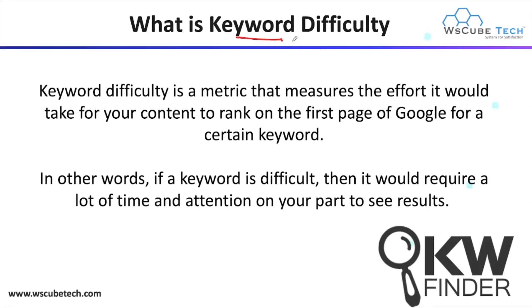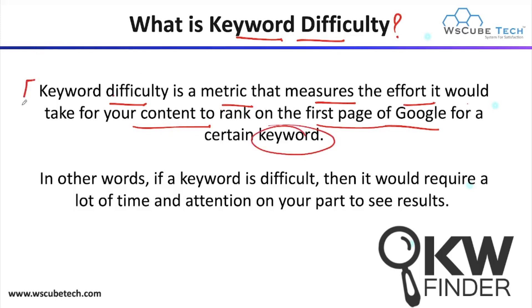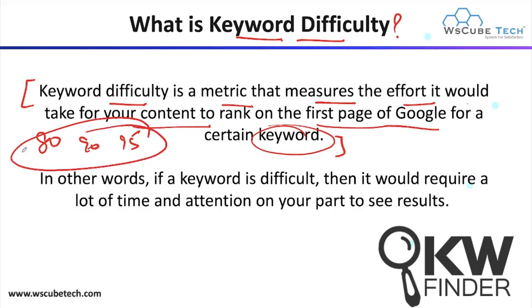So what is keyword difficulty? Keyword difficulty is a metric that measures the effort it would take for your content to rank on the first page of Google for a certain keyword. With the help of keyword difficulty, we can get an idea about the efforts we have to make just to rank our content. If your keyword difficulty is 80, 90, or 95, it means you need more effort to get a good rank on Google's first page.